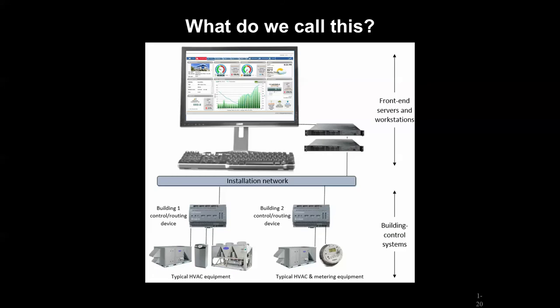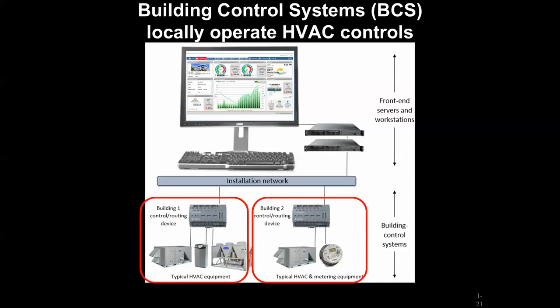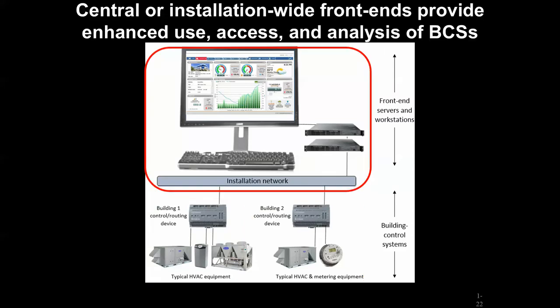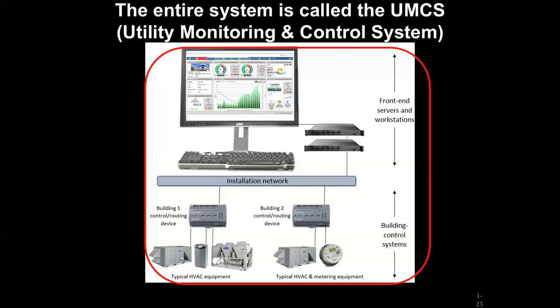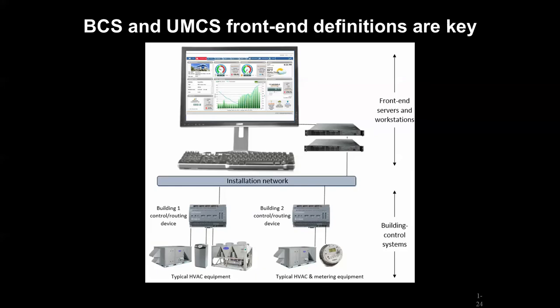Let's start with some basic terminology. Like most things in HVAC, it's really a system of systems. At the bottom, we can look at individual buildings as their own building control system. You might hear the term BCS or BAS — building automation system — and we really want to have local control at those buildings. Where we have a campus or installation environment, it would be nice to have all those buildings interfaced at some central point. We call that the base-wide front end, and we call this whole setup the UMCS, or Utility Monitoring and Control System.